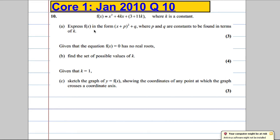Okay, question 10. f of x equals x squared plus 4kx plus 3 plus 11k, where k is a constant. Express f of x in the form x plus p all squared plus q, where p and q are constants to be found in terms of k.